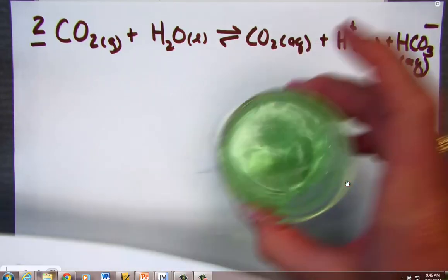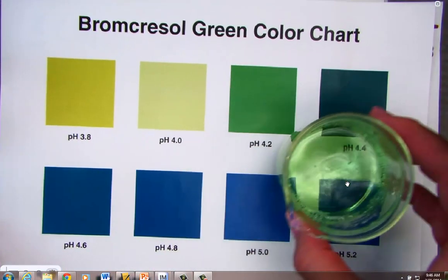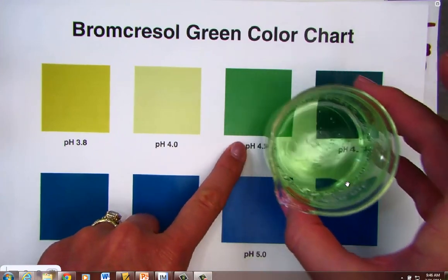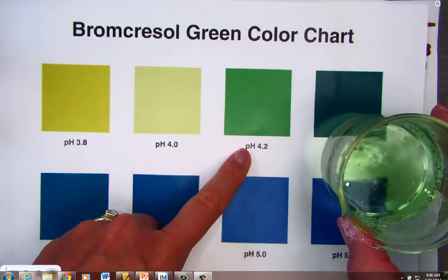Just to review where we are in the color chart of bromo-cresol green, we're a little bit acidic, a pH of about 4 or so.